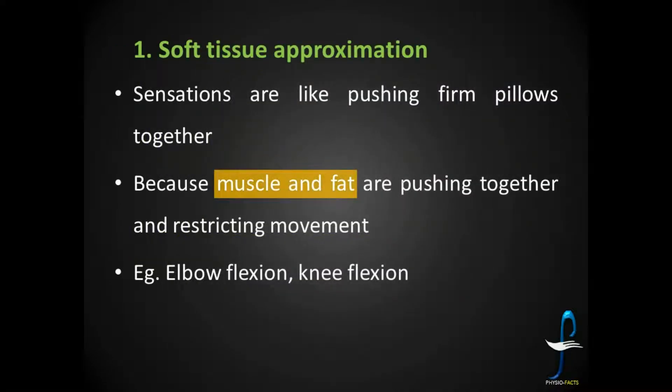Soft tissue approximation. The name itself tells that soft tissues are coming together. These sensations are like pushing firm pillows together because muscle and fat are pushing together and restricting the movement. For example, elbow flexion and knee flexion.